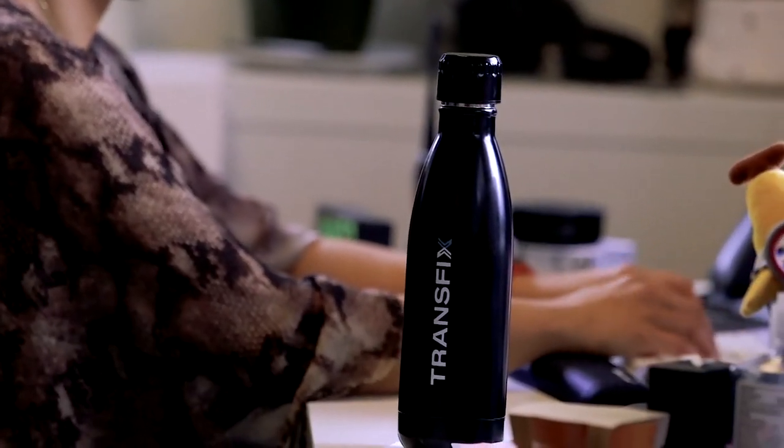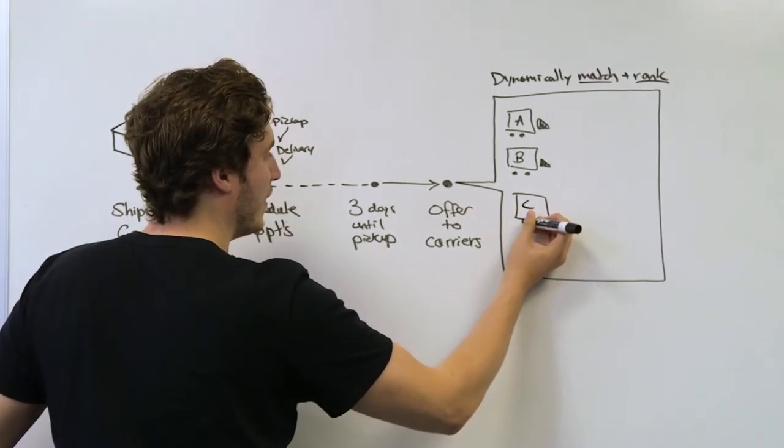As Transfix scales, we have so many carriers entering into our algorithm. We get so much data into our system and need to make sure that every carrier feels they are our number one priority. The products we build take a carrier from being worried about where their next shipment is coming from to never having to worry again.